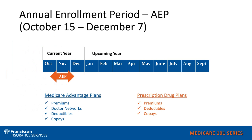The annual enrollment period takes place each and every year from October 15th to December 7th. No matter which type of Medicare plan you are in, you want to make sure you check your plan during the annual enrollment period. During this time, if you have a Medicare Advantage plan, you will want to check and see if there are any changes in premiums, co-pays on the plan, deductibles, make sure all your doctors are in network, and that there are no major changes in how your medicines are tiered.